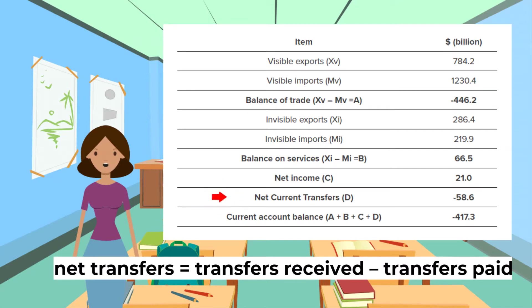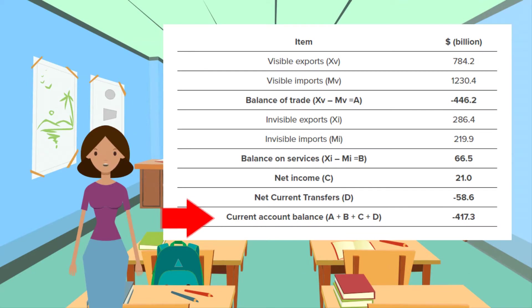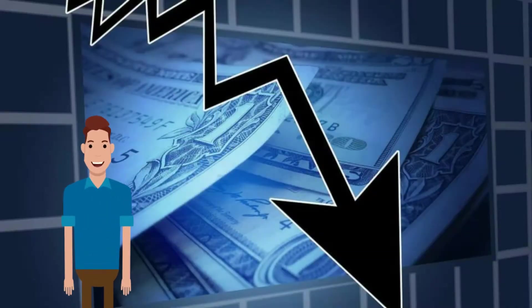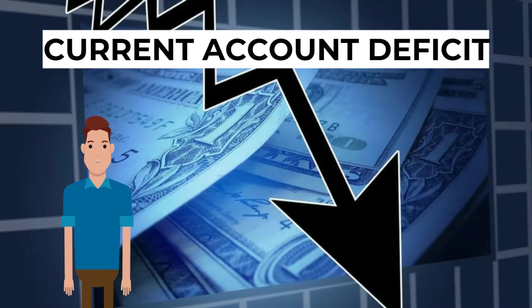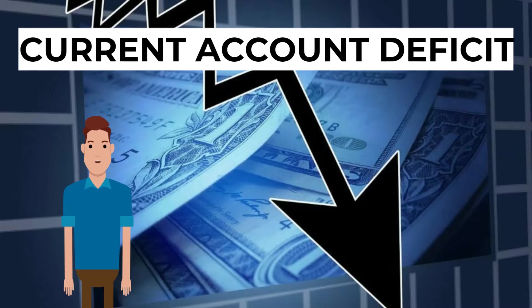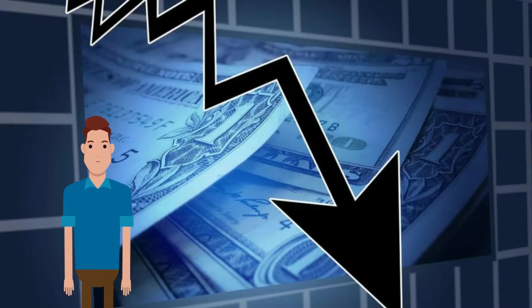When the current account shows a positive number it is in surplus — this is when inflows exceed outflows. When it shows a negative number it is in deficit — this is when outflows exceed inflows. A current account deficit occurs when financial outflows exceed financial inflows, for example when export demand and net incomes and transfers fall, and/or import demand rises.